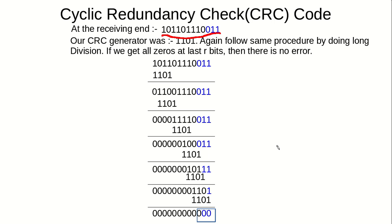If the last three bits are not all zeros, it means there is some error in the communication. The receiver will then request the same packet again from the sender. In the next video, I will show you the implementation of this CRC code in C++. Thanks for watching.